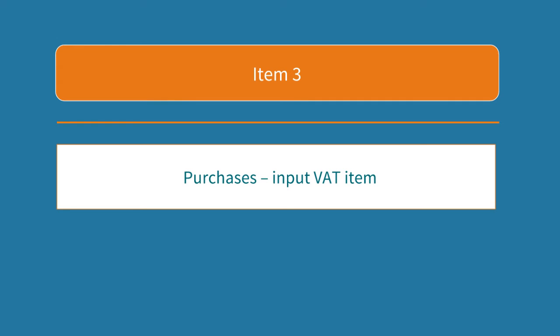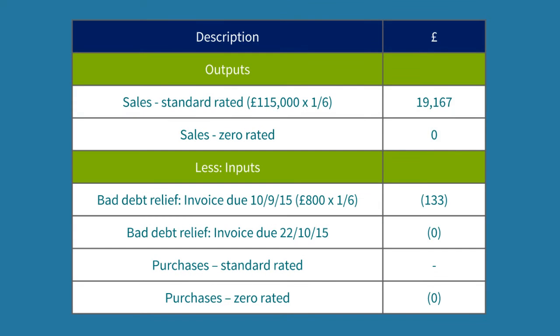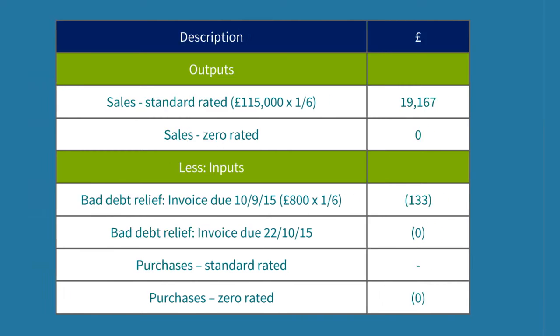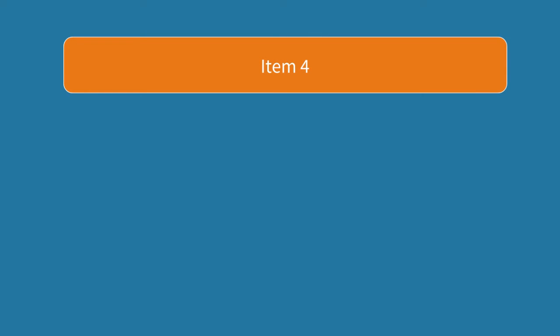Now let's press on with item 3. We're dealing with purchases, so another input VAT item. As with sales, most are standard rated but some are zero rated. To get all our marks we'll need to include both even though the zero rated items will result in zero VAT. For the standard rated purchases, the VAT-inclusive amount is £44,800, so one sixth gives us input VAT of £7,467.